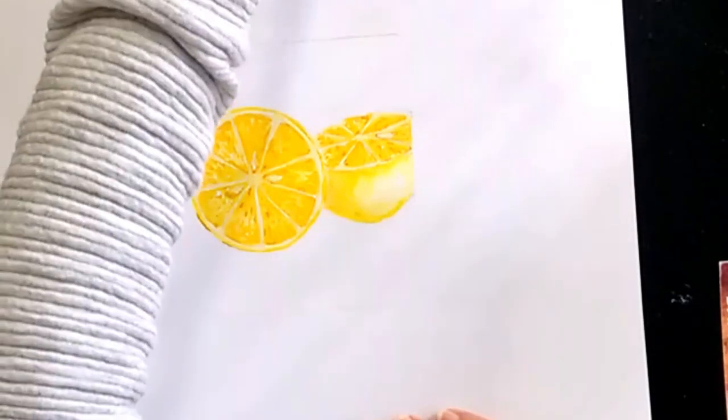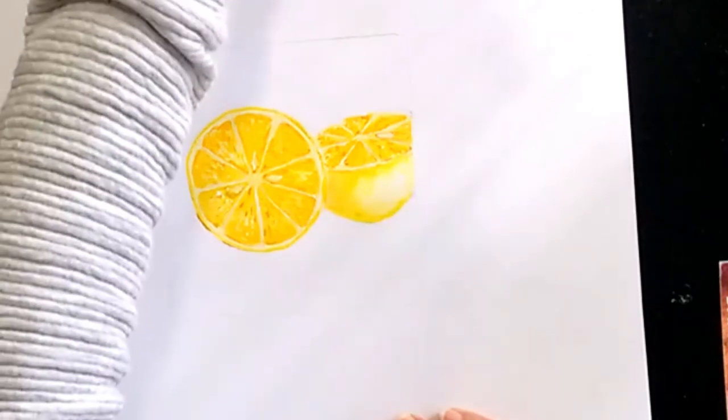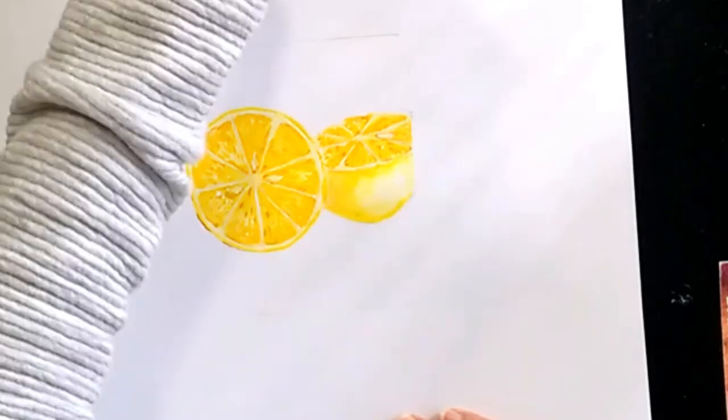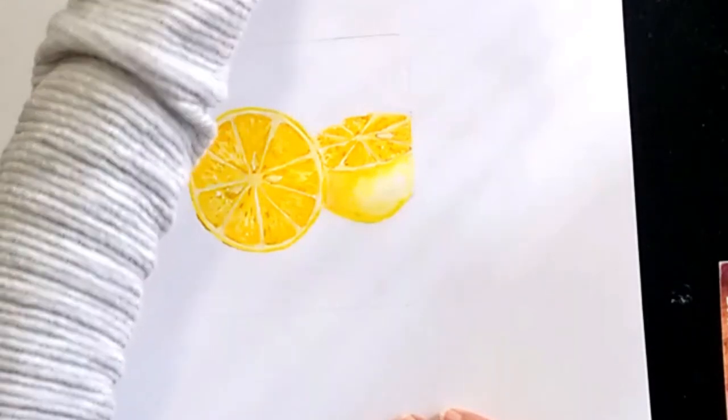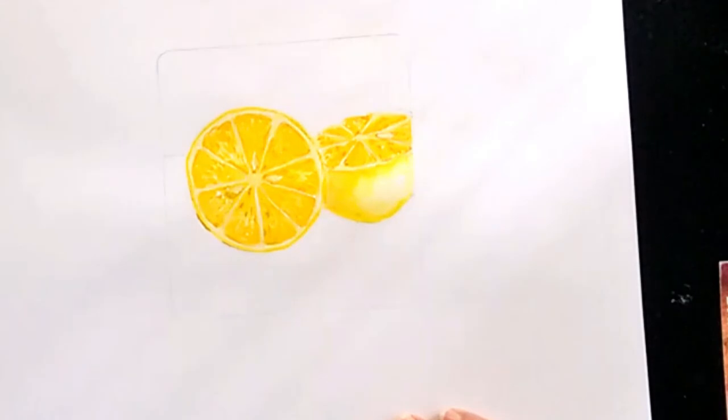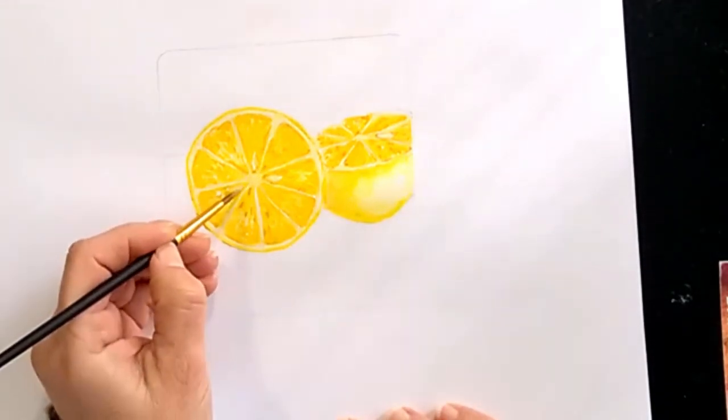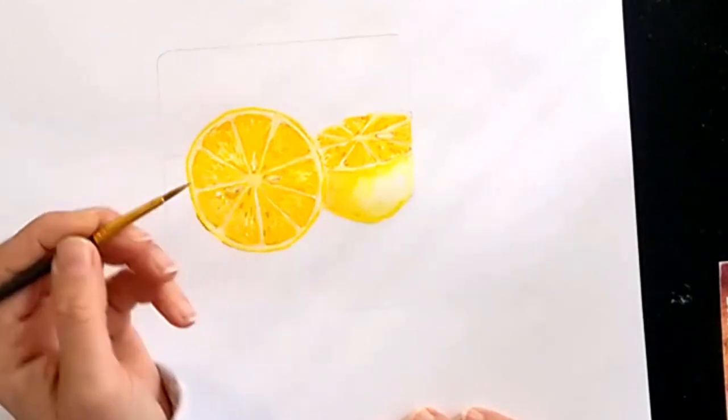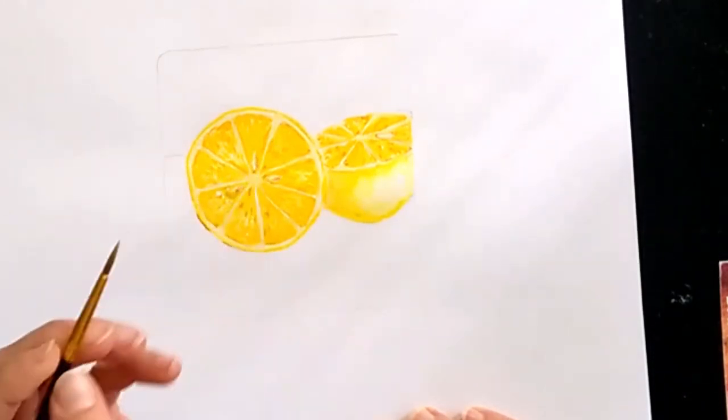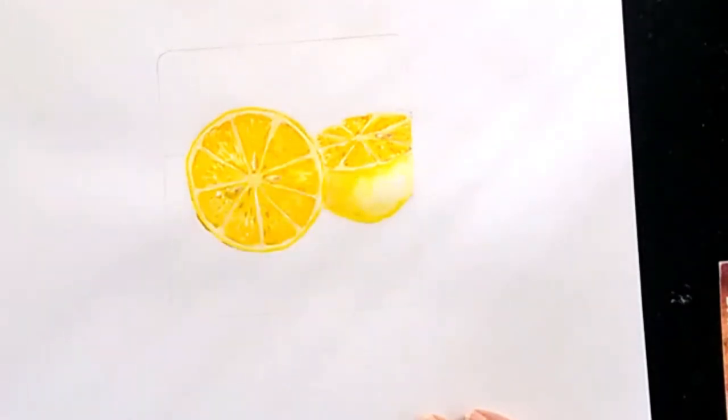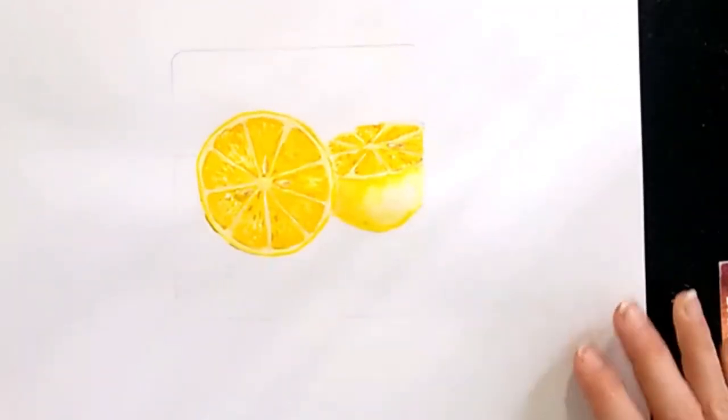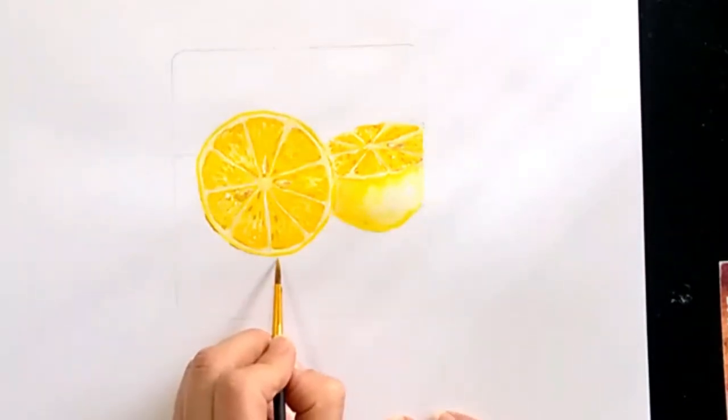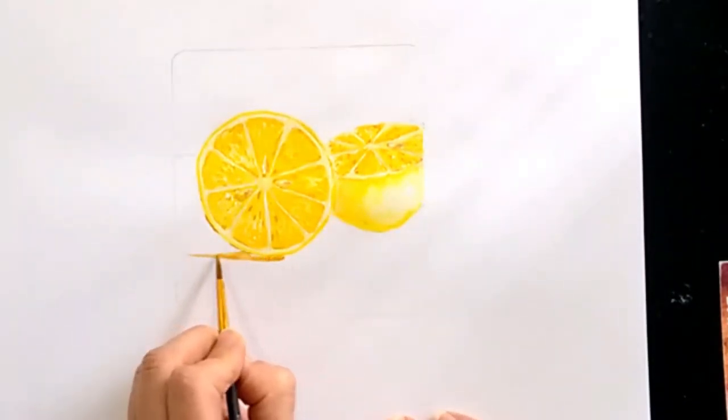So I need to make the seeds. Still white with the brown. Pretty much I can use my brush and just push down, and that will create kind of a seed. Let's blend this lemon.